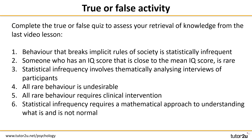Hopefully you were able to make a decision for each of the six statements. Let's take a quick look at these together. Number one was false — breaking implicit rules in society is actually a different definition of abnormality. Number two was false — someone with an IQ score close to the average is definitely not rare. Number three was also false because statistical infrequency is a mathematical approach, so no thematic analysis would be necessary. Four and five are both false because there are plenty of rare behaviours that do not require clinical intervention, such as a high IQ score. And finally, number six was true.